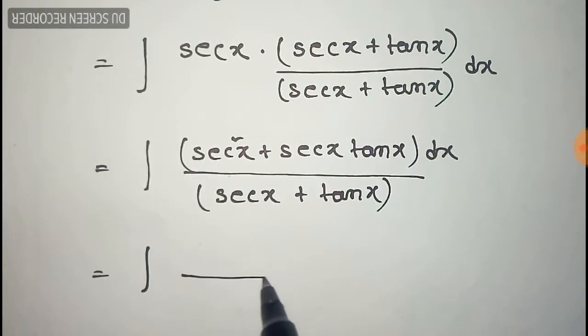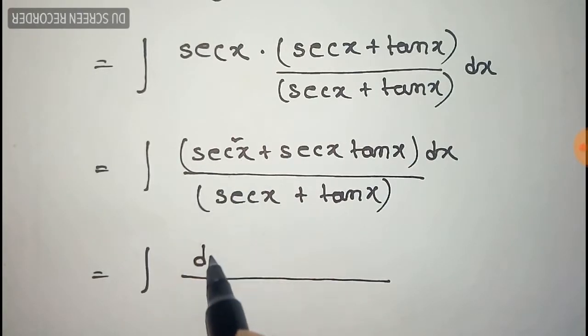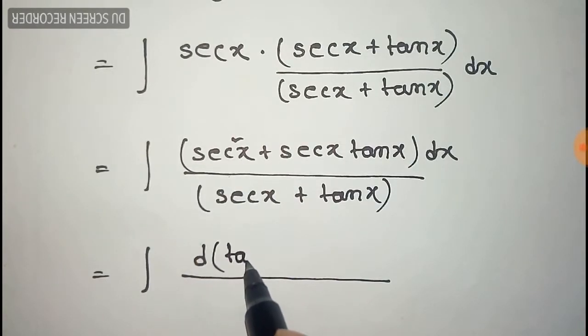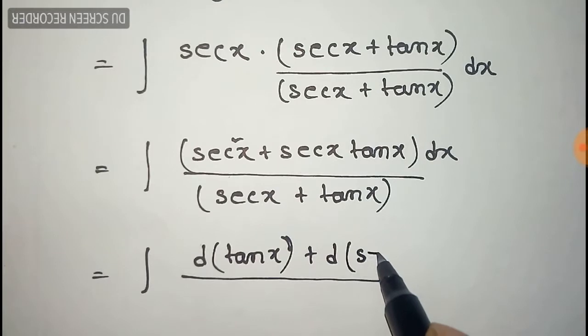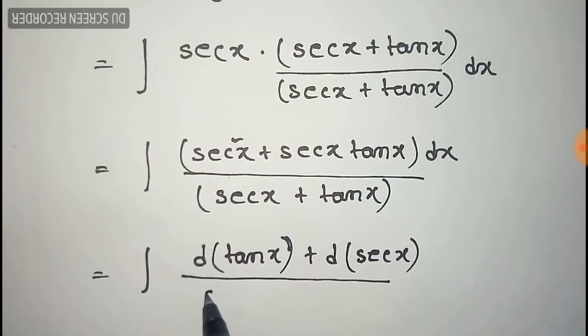Now you can see that sec square x is the derivative of tan x, so we can write sec square x as d of tan x. And it is the derivative of sec x, so d of sec x. You can write it like this and the below part will be same.